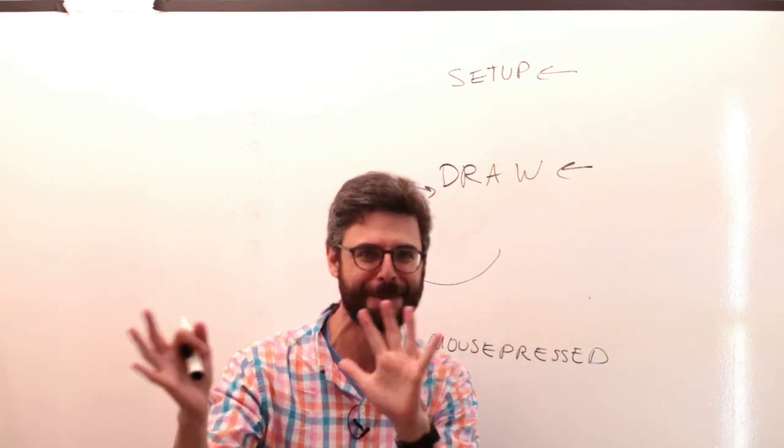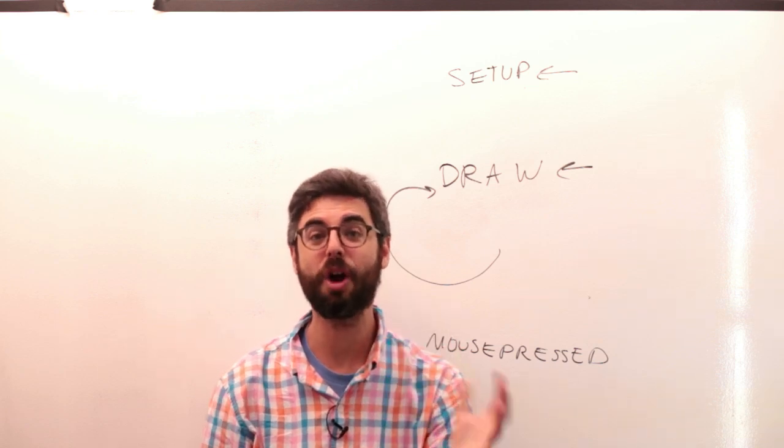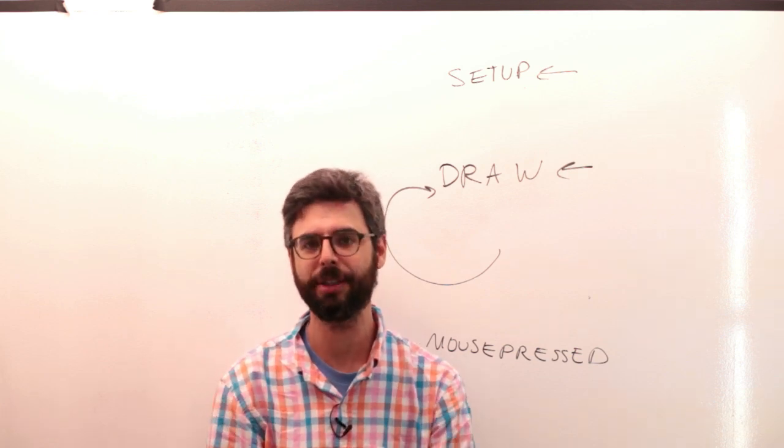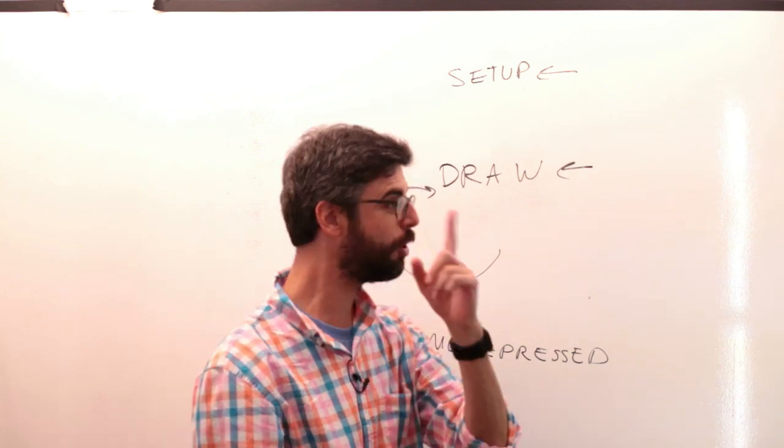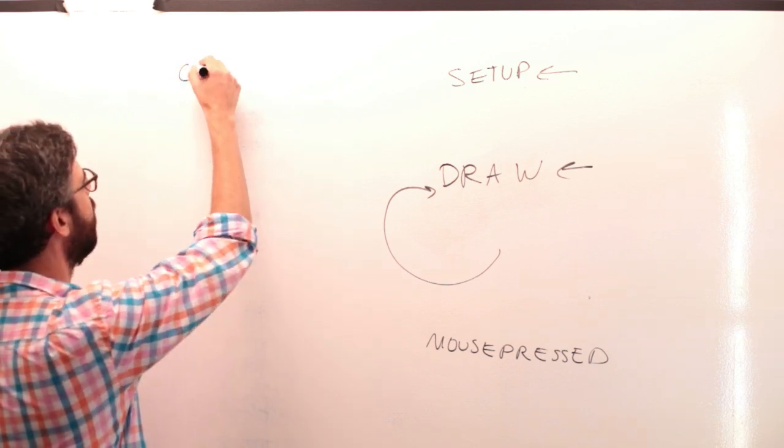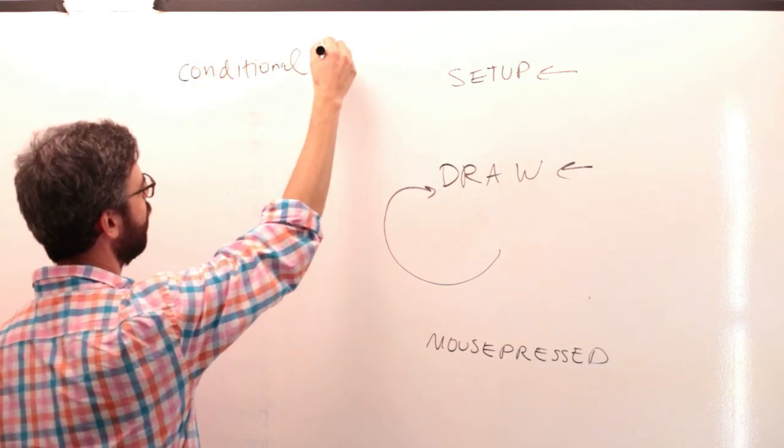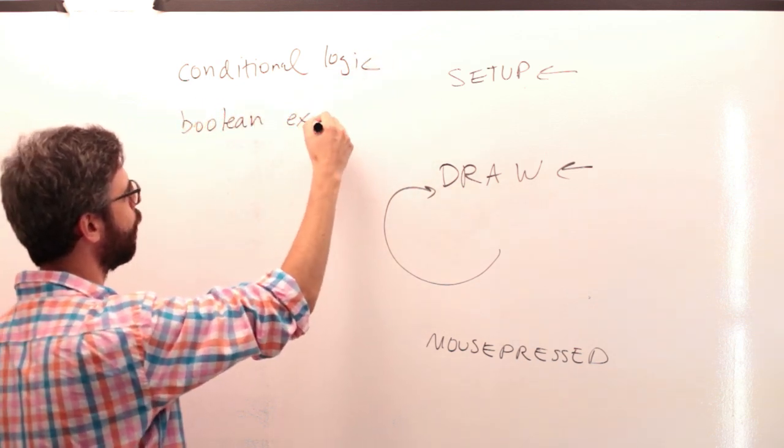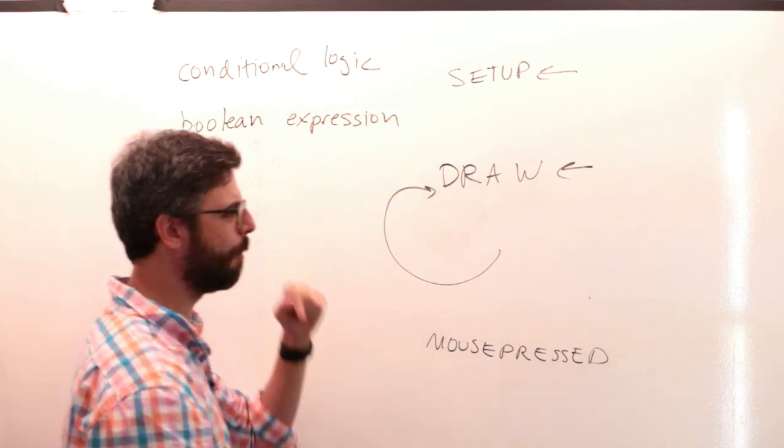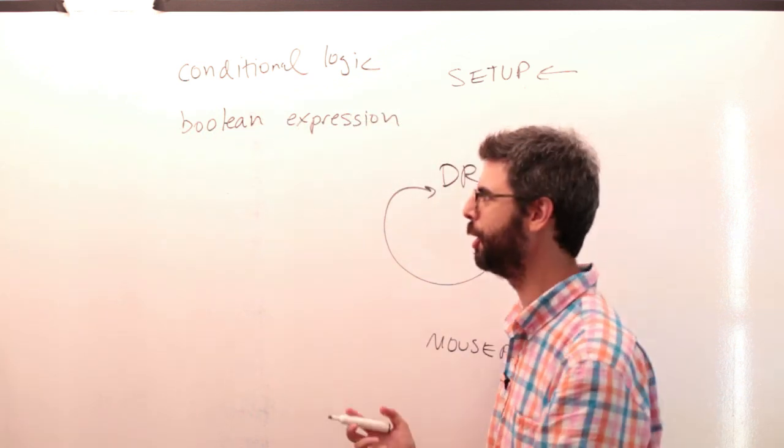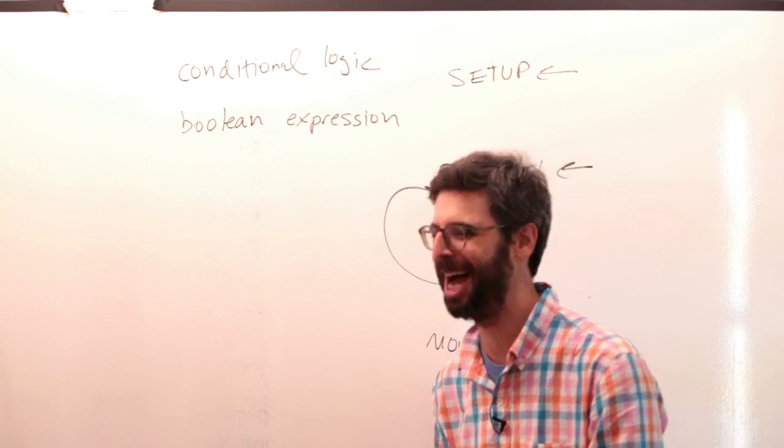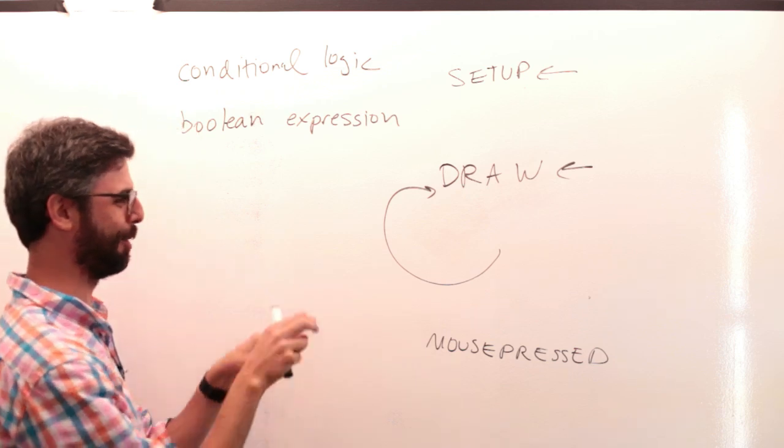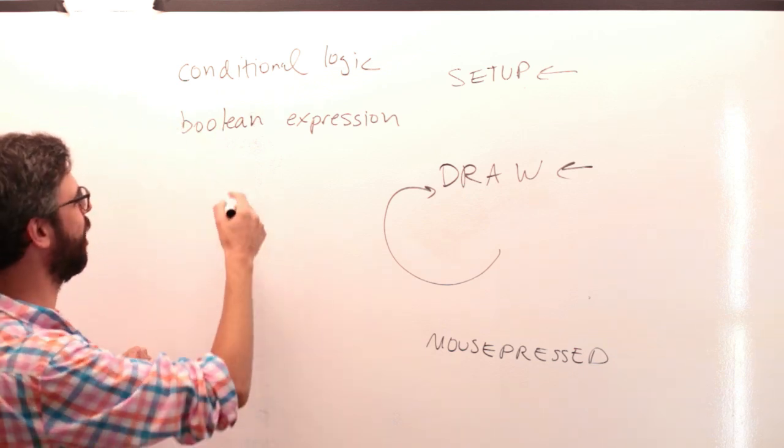I want to have a circle drawn with two different colors based on something the user is doing, perhaps where the user is positioning the mouse. In order to do this we need to learn about conditional logic. Another term we can think of is Boolean expression. Boolean logic from the mathematician, logician George Boole, which I'm probably not getting right. The internet will correct me I assume.